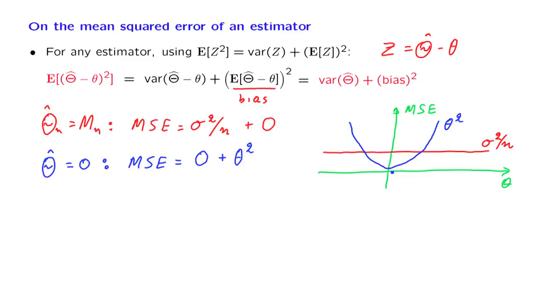If we have some good reason to expect that the true value of theta is somewhere in the vicinity of 0, then the 0 estimator might be a better one, because it will achieve a smaller mean squared error.